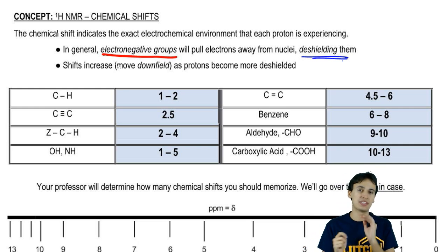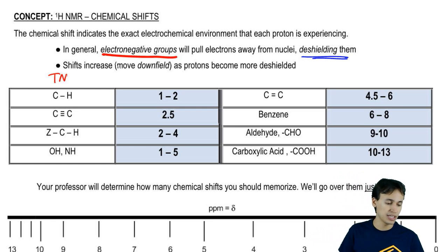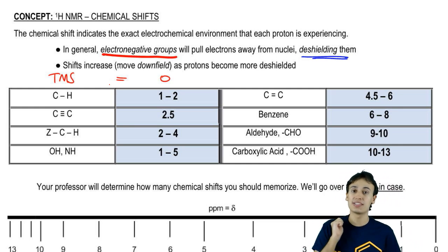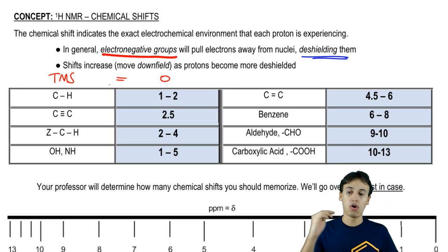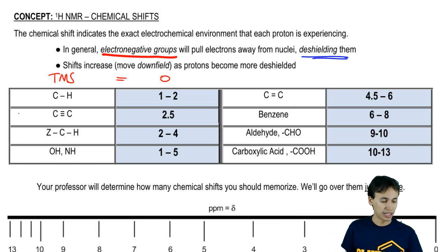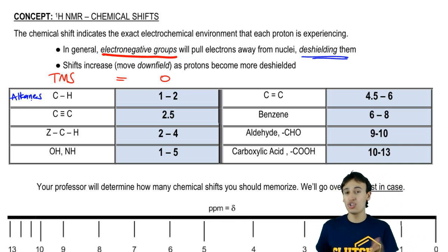Before we get into some very specific shifts that you need to know, we're going to look at a general trend. As our functional groups get more and more electronegative, the bigger the numbers get. Remember, all of this is in reference to TMS, which is our reference molecule that has, by definition, a shift of zero because that is our reference point. We're saying all of these things in order - they get more and more deshielded as you go down the list. Alkanes are actually the most shielded organic molecules because there's no electronegative things pulling electrons away. These are going to shift at the lowest number, around 1 to 2.